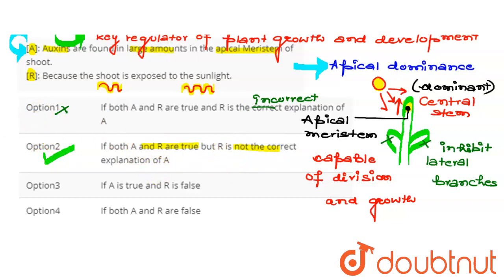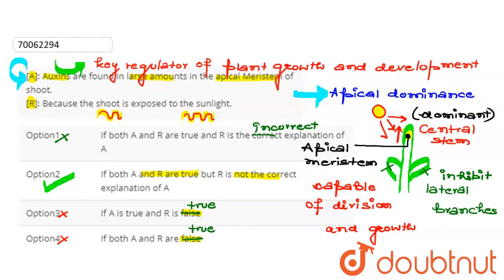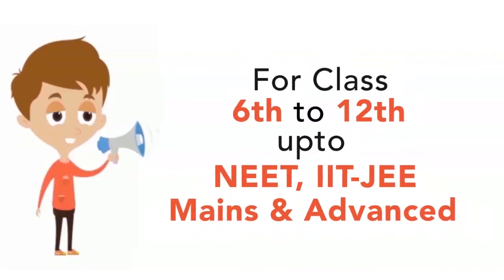And reason is not the correct explanation of assertion. So on that basis, your option B we will mark wrong here, right?